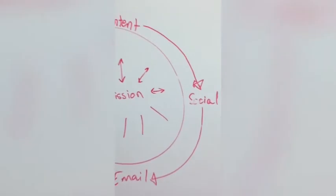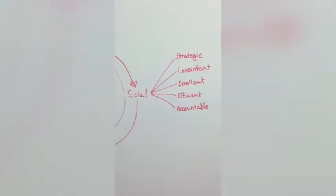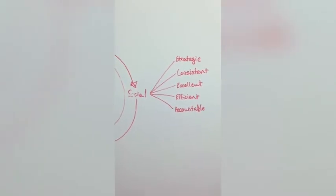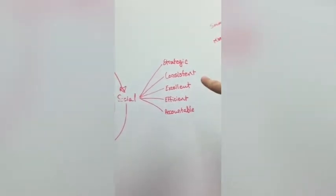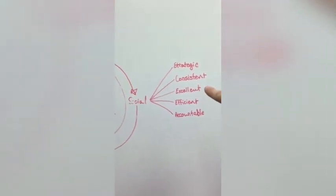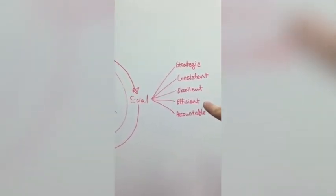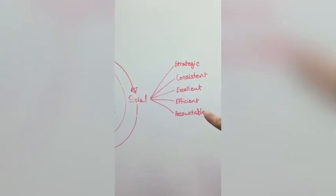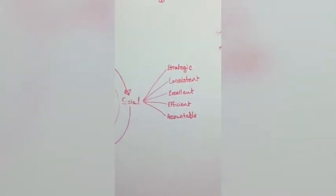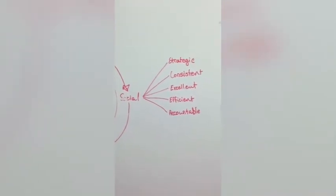Here is where we get a little more micro. You've got social, and I have branched it out into five different sections. The first part of social is being strategic. The second is being consistent. The third is being excellent. The fourth is being efficient. And the fifth is being accountable. Without any of those — if you lack any of those — you will eventually experience failure.